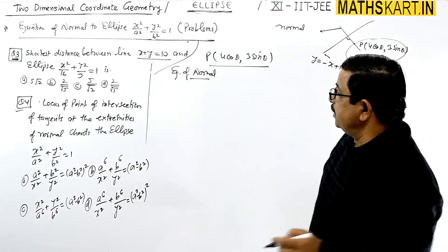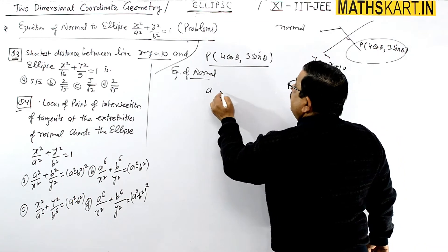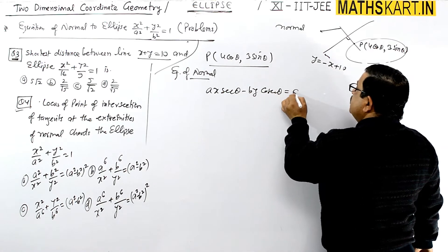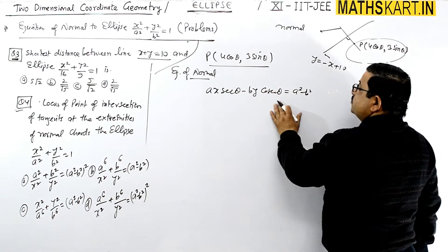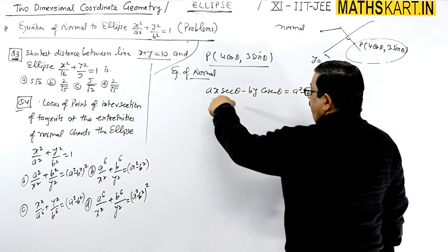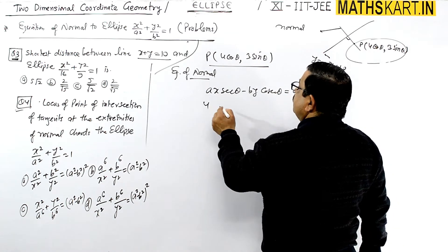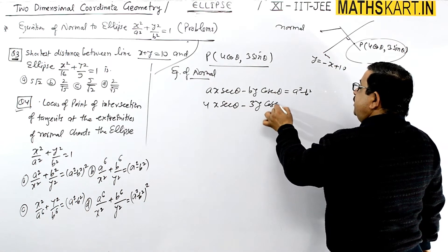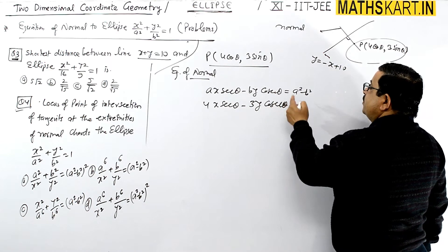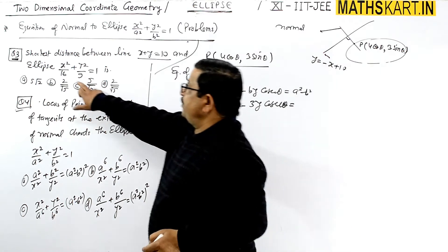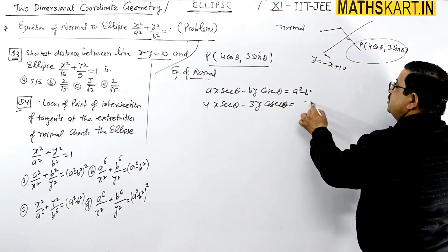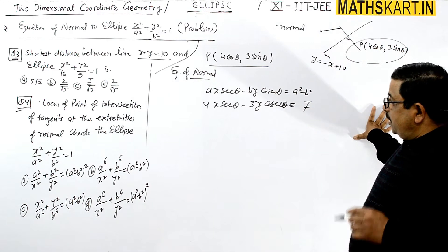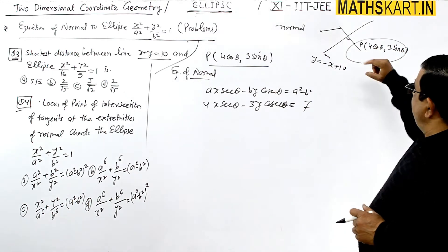Now the equation of normal at point P is: a·x·secθ − b·y·cosecθ = a² − b². With a = 4, this becomes 4x·secθ − 3y·cosecθ = a² − b² = 16 − 9 = 7.